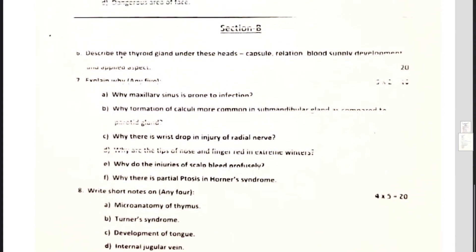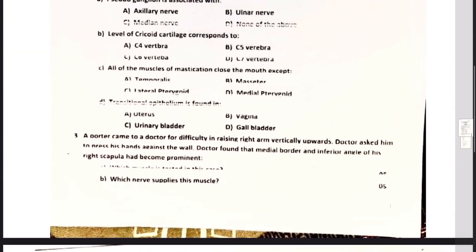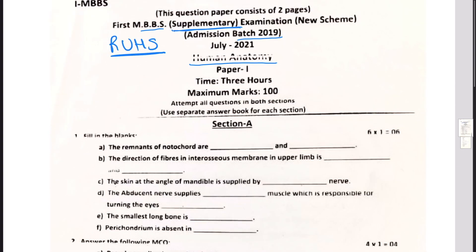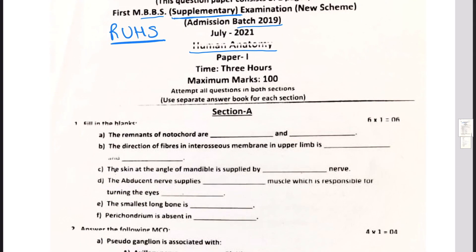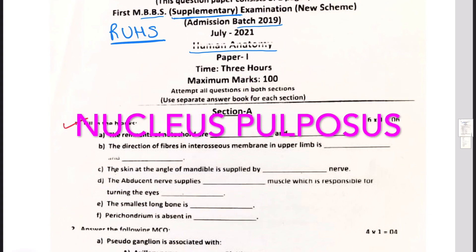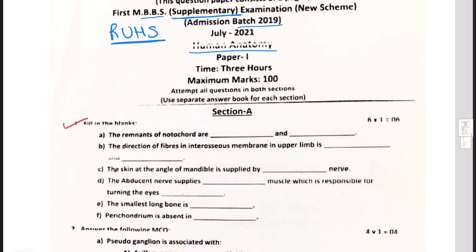Section B is subjective and section A is mostly objective. There are six fill-in-the-blank questions as question number one: The remnants of notochord are dash and dash. Remember this notochord along which the vertebral column develops. Those intervertebral discs onto which the vertebrae are held together, in between the body of vertebrae.